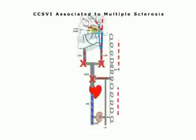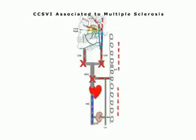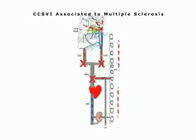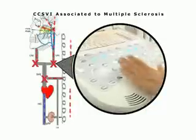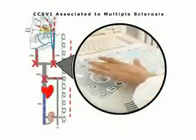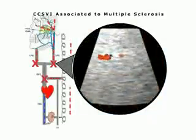In CCSVI, the veins are more or less obstructed depending on the individual subjects. This congenital venous malformation is associated with multiple sclerosis, causing the blood to flow in the opposite direction, i.e. towards the brain and not towards the heart.